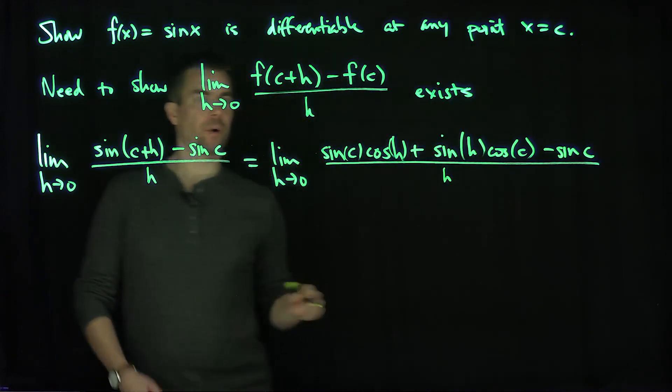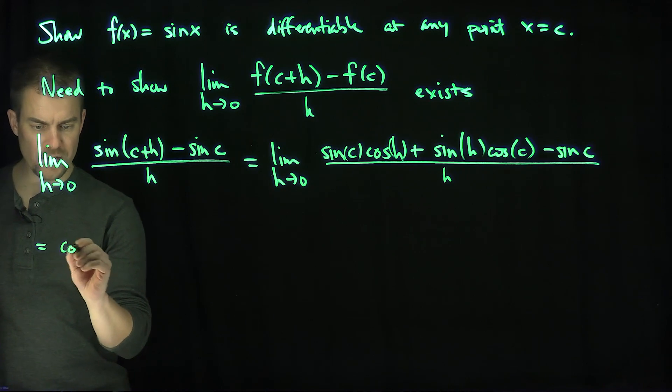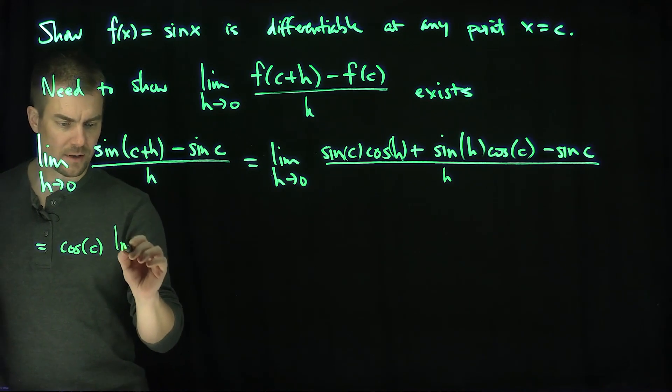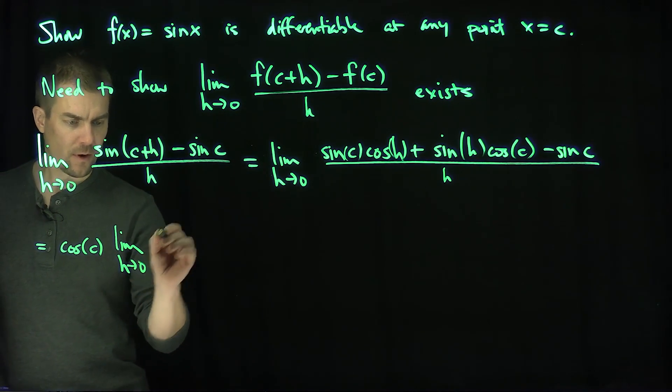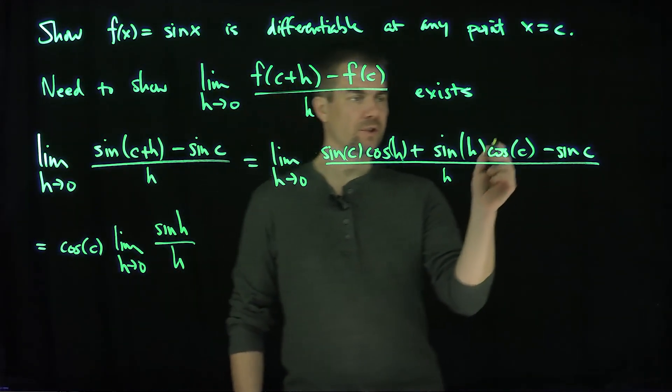So I'm going to break this limit into two parts. The first part is the following. This is going to be cosine of c, that's just a constant, times the limit as h goes to zero of sine of h over h. That comes from this term over here.